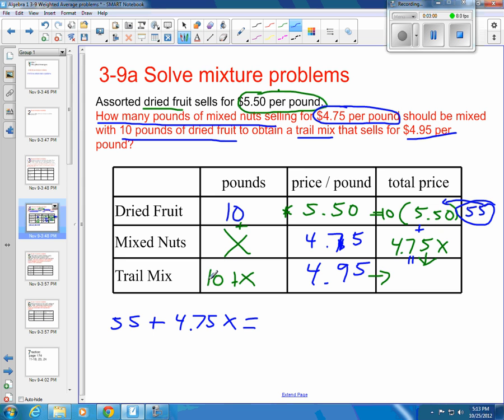If I work my way across, if I have 10 plus X pounds of trail mix, I would multiply by that times the amount of price per pound. That's going to be 4.95. That would also give me my total cost for my trail mix. Now I've got one equation and I can solve it.